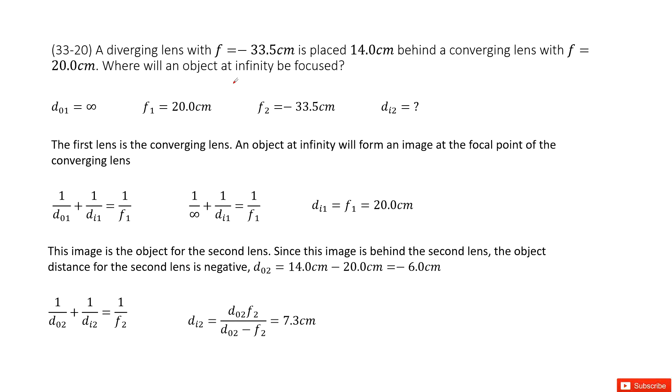We have two lenses placed in sequence. For the first lens, we have dO1, the object distance, which is at infinity. So we consider it as infinity.